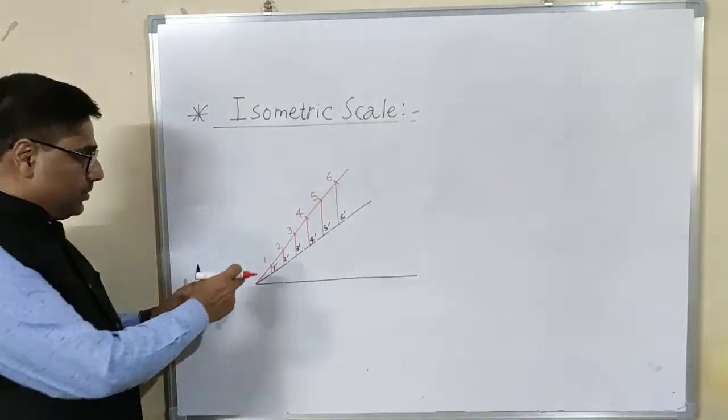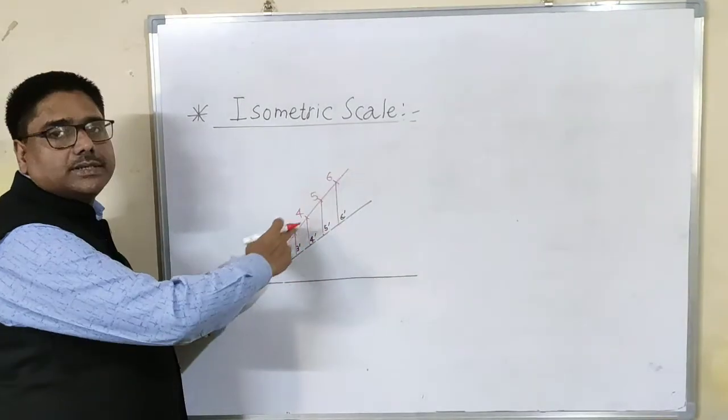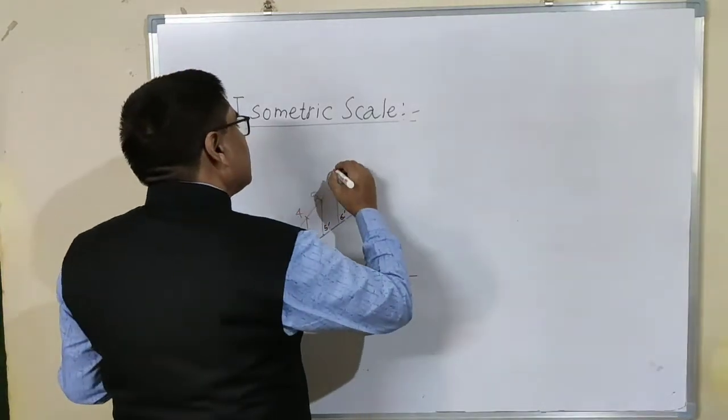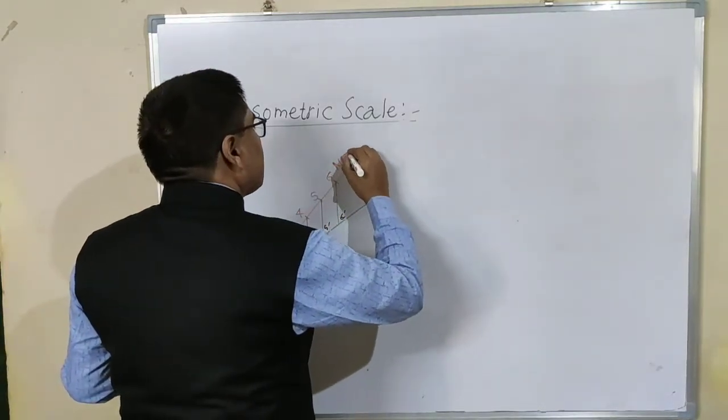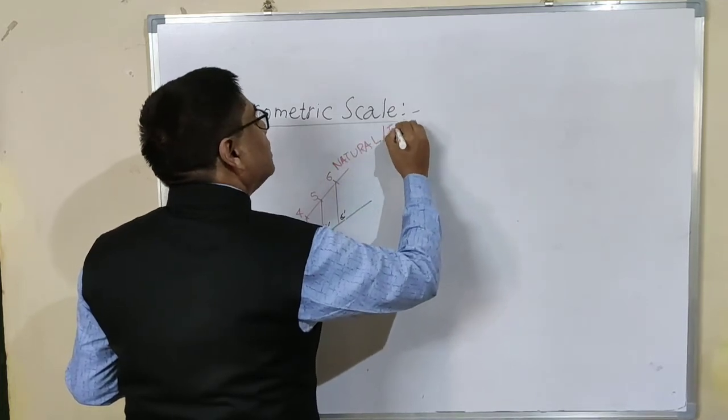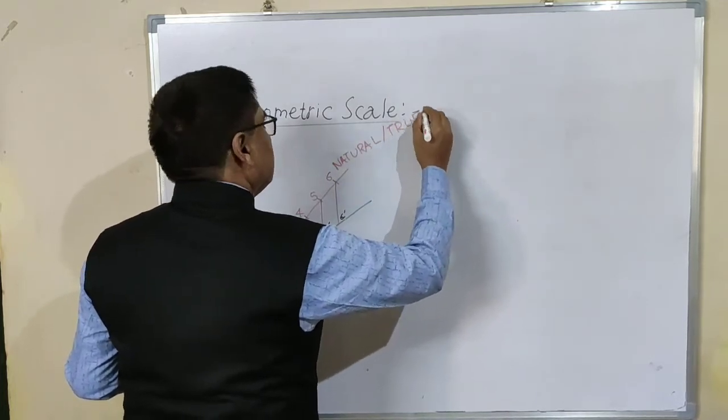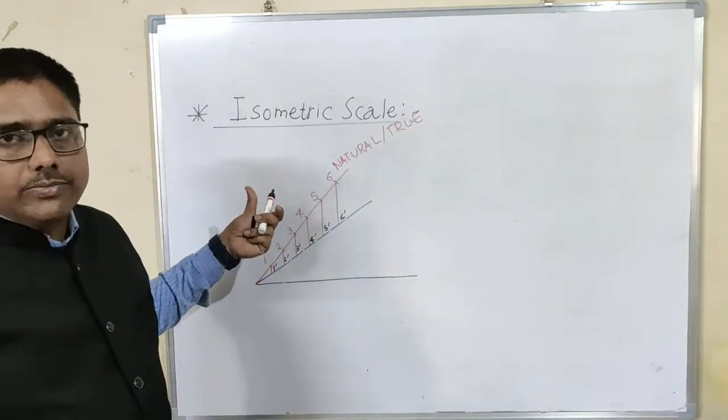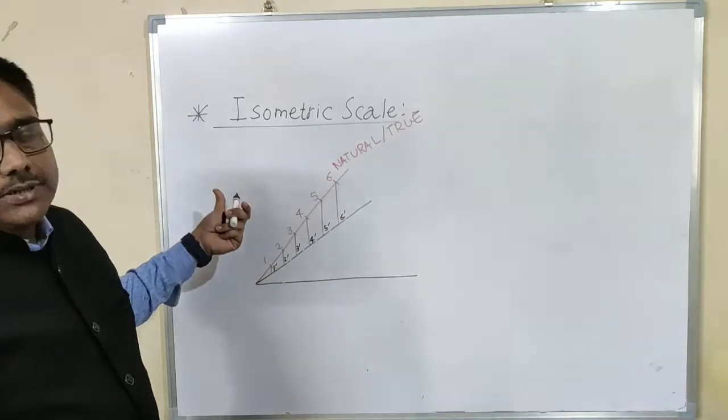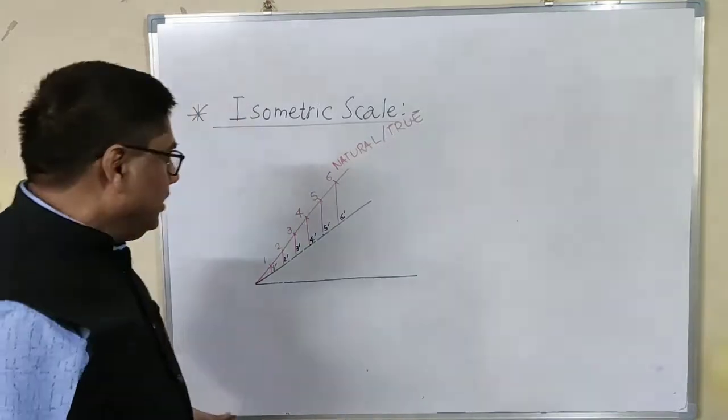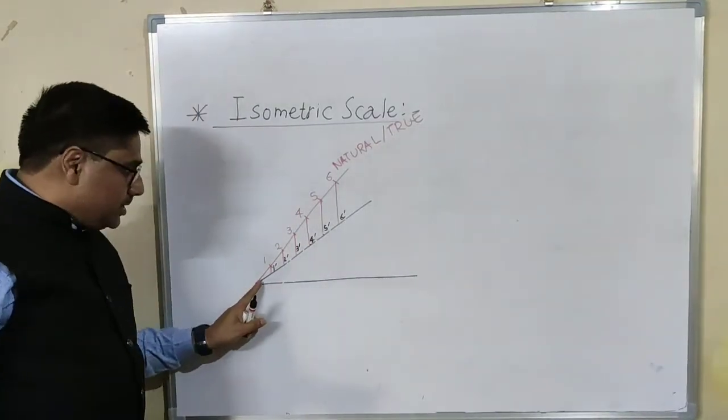If we use these lengths, this is as good as our normal scale. It is known as natural scale or true scale. By using these dimensions given in orthographic views, if you transfer those dimensions as it is while drawing isometric, then it is called isometric view.